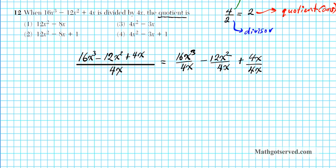There are two ways we can do this. One way is by factoring out the GCF from the numerator and then reducing, or you can do term by term division. I'm going to do the term by term division approach here. So this is the same thing as 16x³ divided by 4x minus 12x² divided by 4x plus 4x divided by 4x.